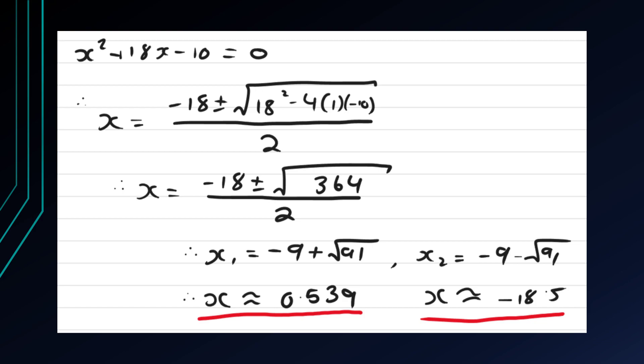Hopefully you had a good try at it. Here's the solution. I should have marked these as a, b, and c. So the quadratic equation, negative b plus minus root b squared minus 4c over 2a.